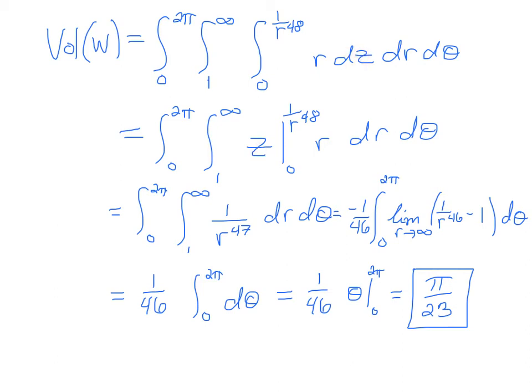So I have a z here, and then my limits of integration are going from 0 to 1 over r to the 48th power. I'm going to substitute those in for z. So I'll have 1 over r to the 48th power minus 0. So that'll be 1 over r to the 48th power, or r to the minus 48th power. I'll simplify, multiplying that expression by r, and I end up with 1 over r to the 47th power.